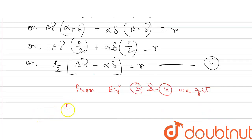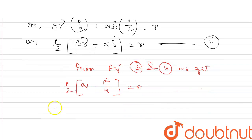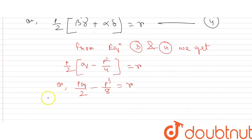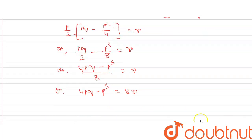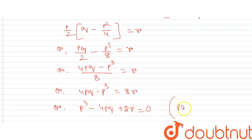Now substituting equation 3 into equation 4: (p/2)(q - p²/4) = r, which gives pq/2 - p³/8 = r. Multiplying through by 8: 4pq - p³ = 8r. Rearranging: p³ - 4pq + 8r = 0. This is proved.